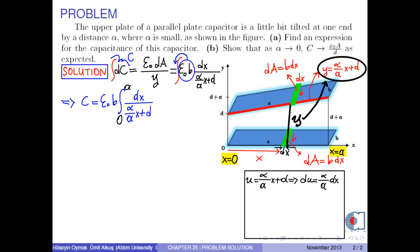For the integral limits, x equals 0 gives u0 as d, and for the upper limit a, we have uA as alpha plus d. Now, we can put these expressions into the integral.